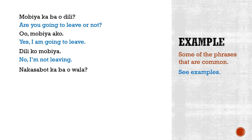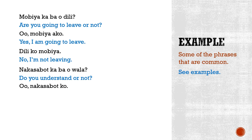Nakasabot ka ba o wala? Sabot means understand. So nakasabot ka ba? means: Do you understand? O wala — or not? Oo, nakasabot ko — Yes, I understand.